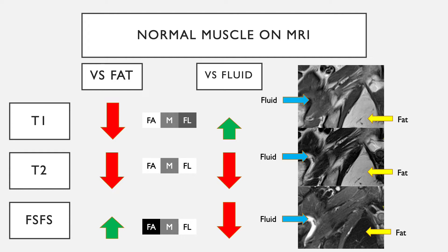On fluid-sensitive fat suppressed sequences, fat is dark, fluid is bright, and the muscle sits somewhere in between. Between the T1 and the fluid-sensitive fat suppressed images, essentially one is a negative of the other — there is inversion of both. Muscle remains relatively gray throughout.